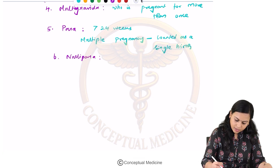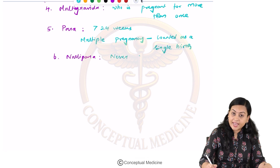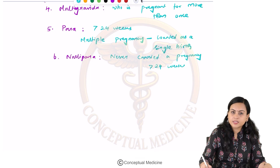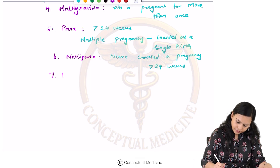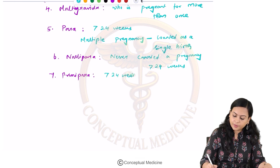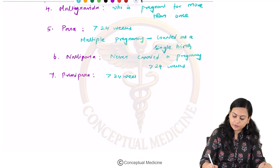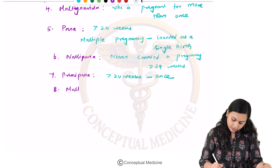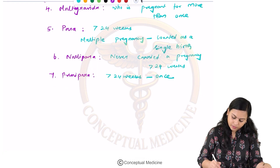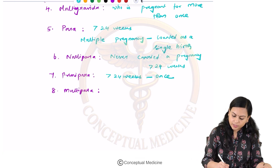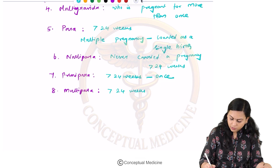A nullipara is one who has never carried a pregnancy after 24 weeks. A primipara has carried a pregnancy beyond 24 weeks only once. A multipara has carried her pregnancy above 24 weeks more than once.